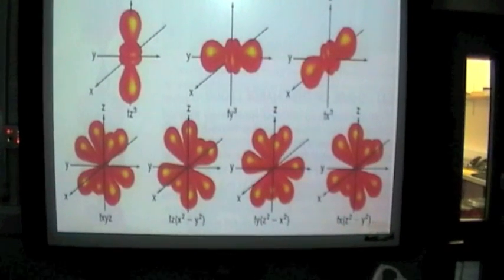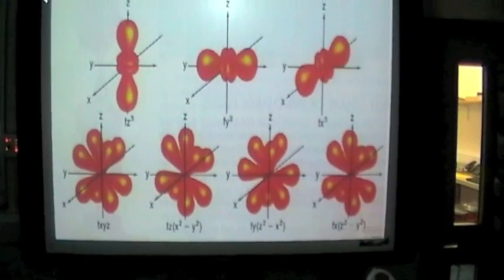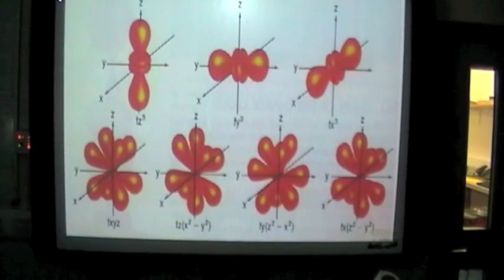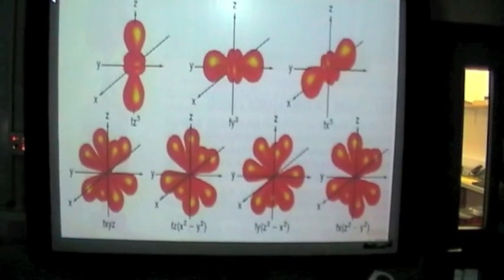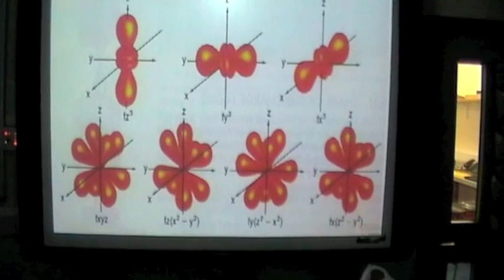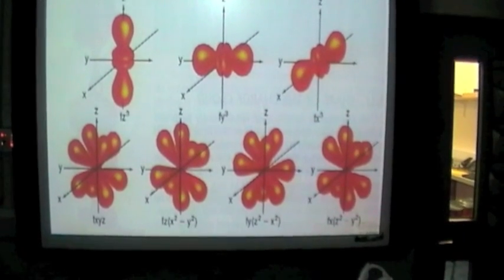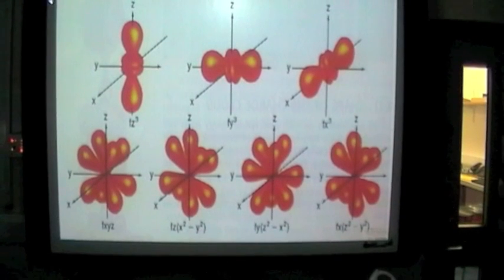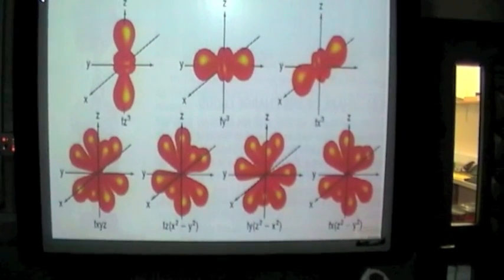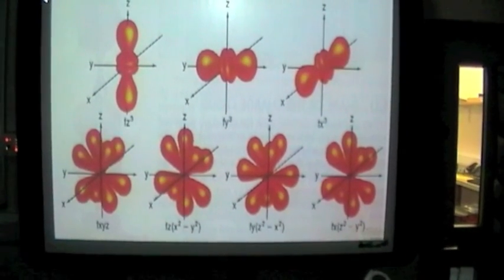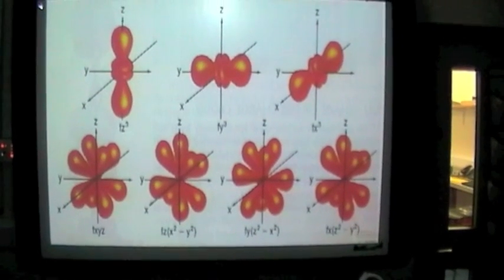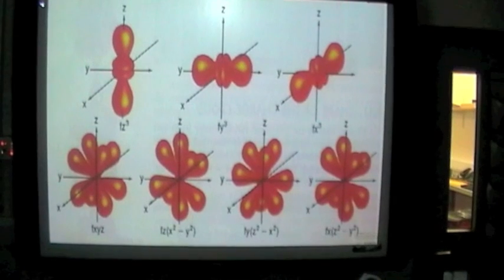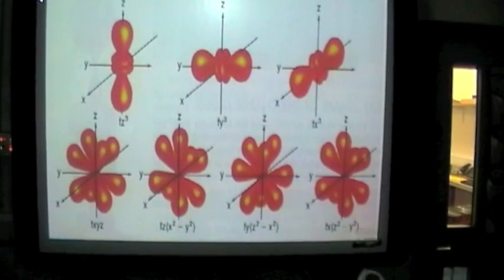So here's a picture of the F orbitals. And the most important thing, again, to notice from this slide is not the shapes. Don't panic. You don't have to know these shapes. You only need to know the shapes of the S orbital and the P orbital. But you do need to know that there are seven orbitals that make up the subshell. So an F subshell will be made up of these seven individual orbitals.